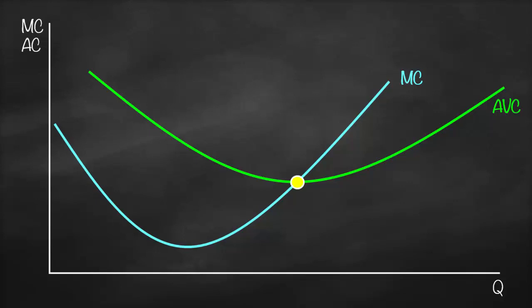We know that marginal cost will intersect with average variable cost at the minimum. Therefore, marginal cost will be equal to average variable cost only when average variable cost is at its minimum.